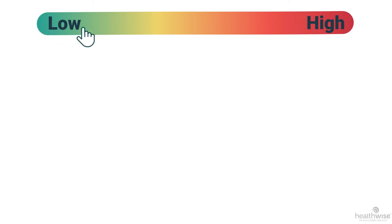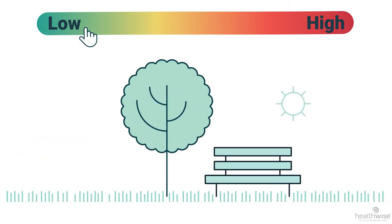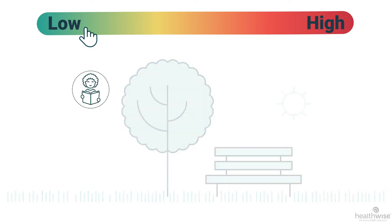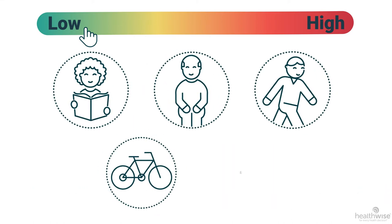Activities that have a low risk include enjoying the outdoors. Examples are things like reading, sitting, walking, biking, and running.